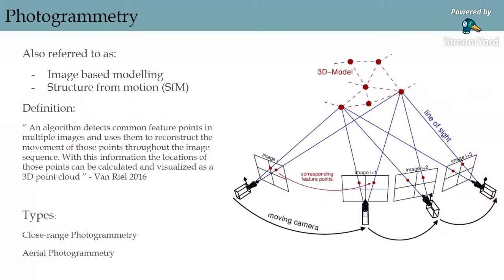Photogrammetry is sometimes also referred to as image-based modeling or structure from motion. It's basically the process of taking overlapping 2D images to create a 3D point cloud. Specific software detects common features within 2D images and uses them to reconstruct the movement of those points throughout the image sequence. There are two types of photogrammetry: close range and aerial.